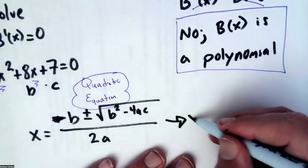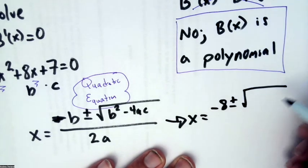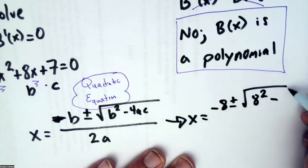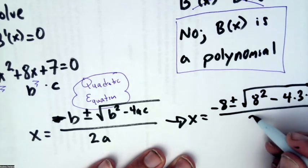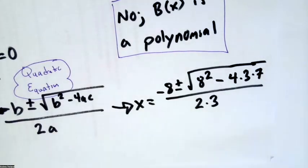And I'm going to solve this now and say, the x solutions are x equals negative 8 plus or minus the square root, 8 squared minus 4 times 3 times 7, all over 2 times 3. And this is a place where it'd be totally appropriate to use a calculator to simplify this.